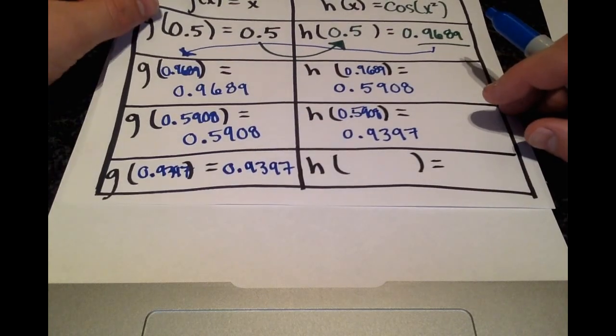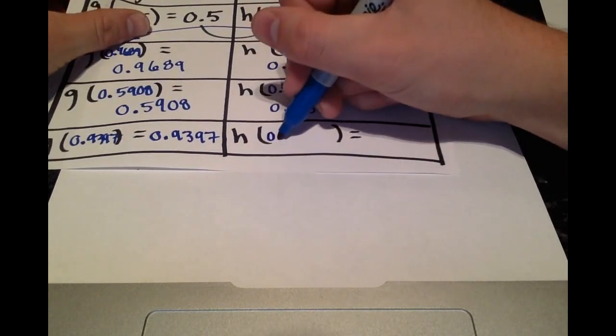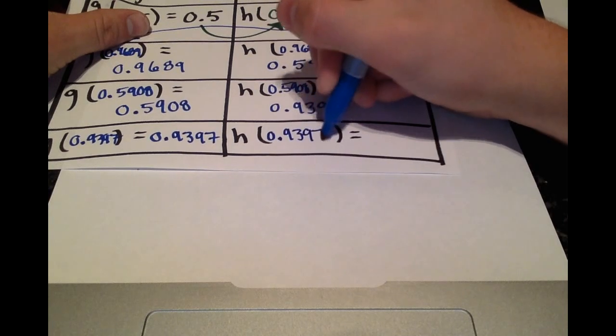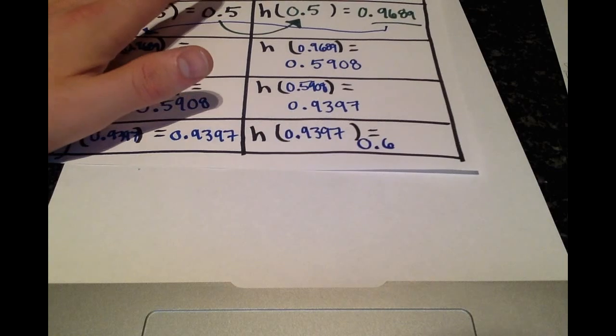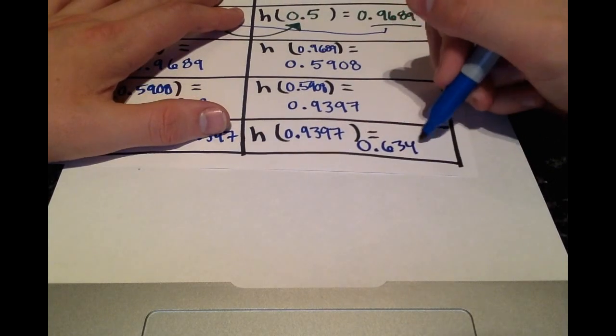Okay, and then lastly, h of 0.9397 will equal 0.6348.